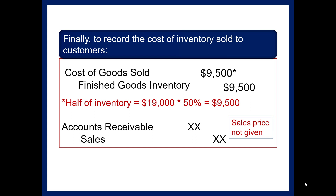This wraps up journal entries in process costing. The main takeaway is that inventory will have a Work in Process Inventory account for each processing department, and costs accumulate from one department to the next until inventory finally goes to Finished Goods and ultimately Cost of Goods Sold. Get some practice with the homework problems available.